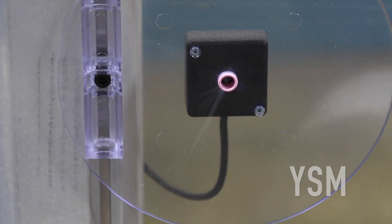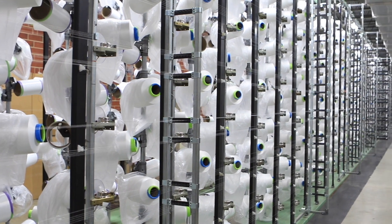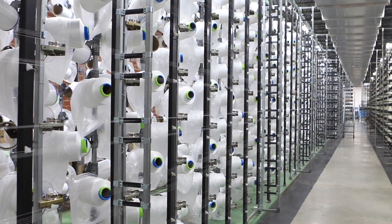Broken ends are the number one cause of quality problems in warp knitting and weaving. The best way to prevent this is to monitor for broken ends at the package.